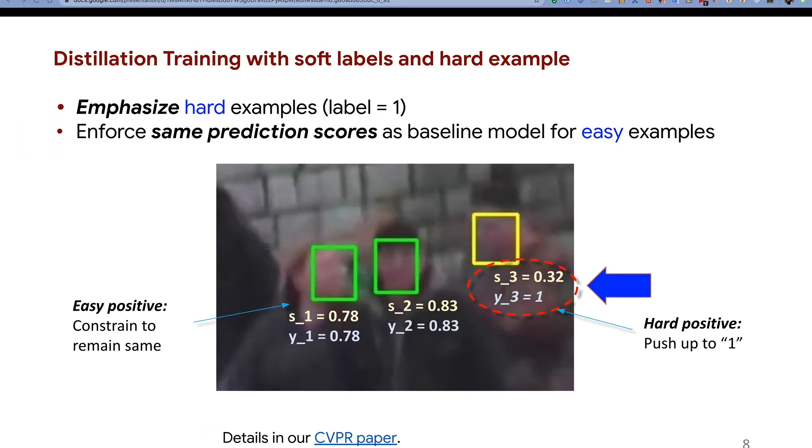Based on these two types of positive examples, easy and hard, we can develop a new training strategy. We call that distillation training. In this training, we want to emphasize hard examples, but still want to be successful on easy examples.